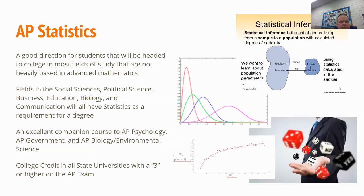Another course we offer is AP statistics. This is particularly good for students that are headed to college in most fields of study that aren't heavy in advanced math — fields like social sciences, political science, business, education, biology, and communication all have statistics as a requirement for a degree. It's an excellent companion course to AP psychology, AP government, and AP bio or environmental science. All students who successfully pass the AP exam with a three or higher earn college credit at all state universities in Arizona.